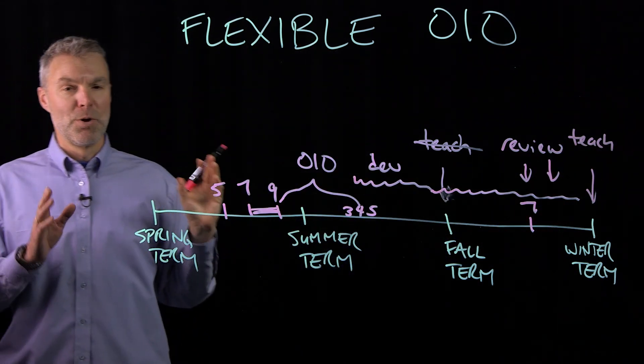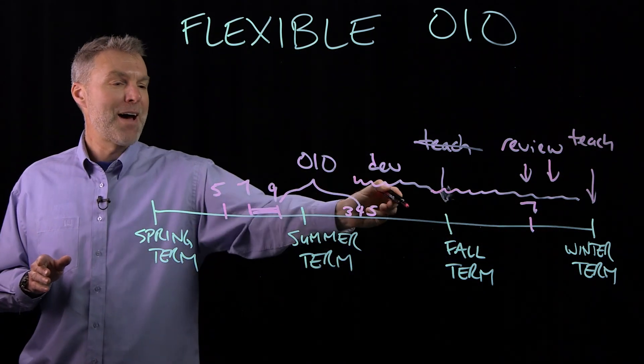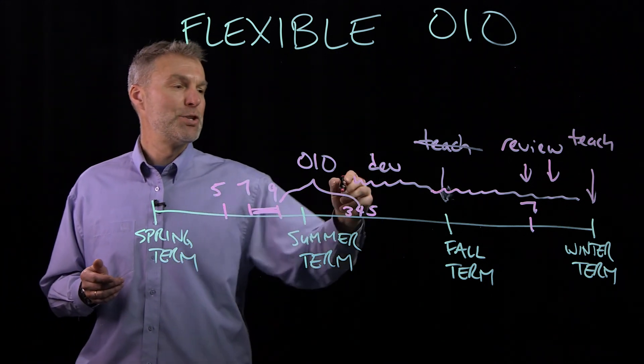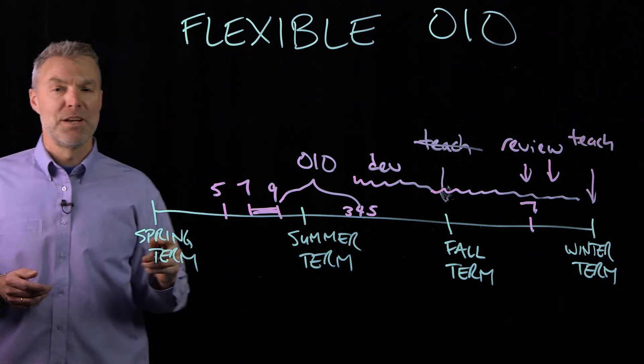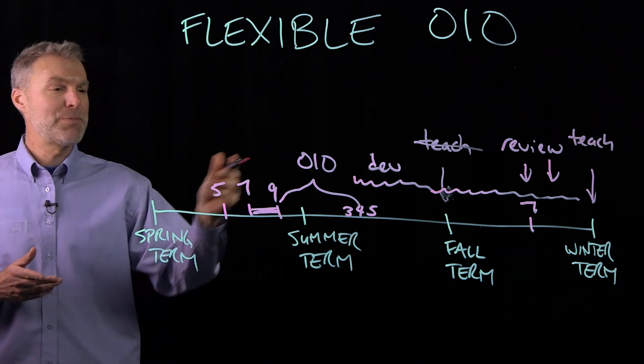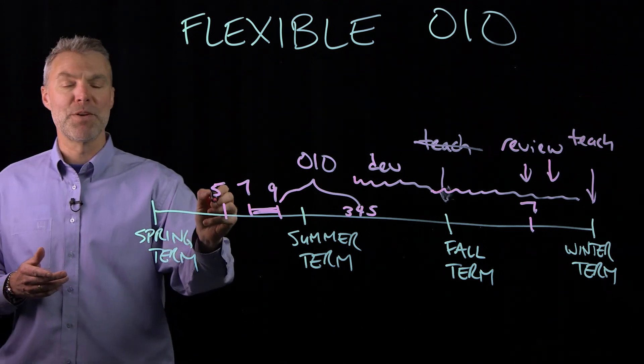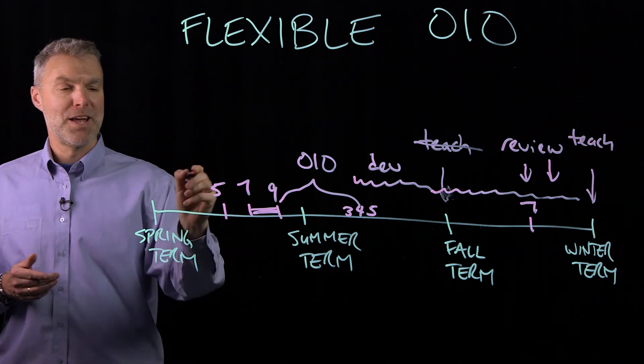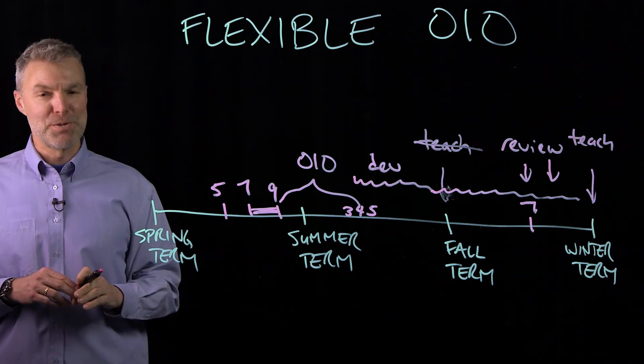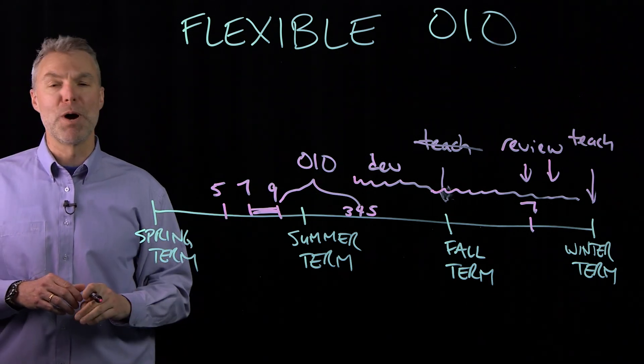So rule of thumb: term and a half to take over a course for a new instructor who needs training, two and a half terms to train and develop a new online course. If you just keep those times in mind, but always remember that week five of the term is the time that you want to be focused on, and that's really your deadline, you should be fine and your instructors should be well prepared to teach online.